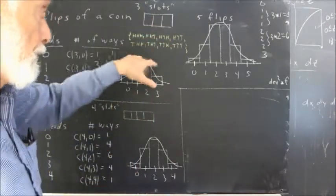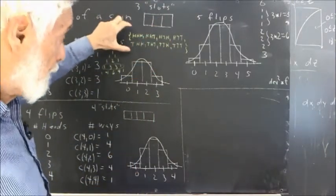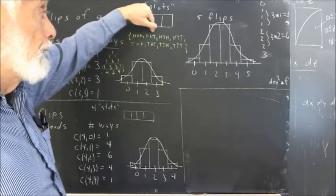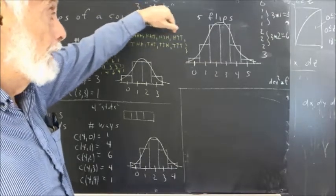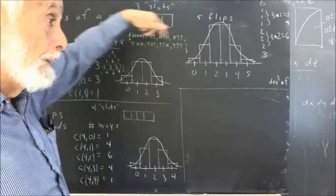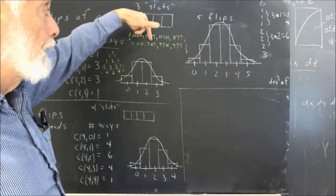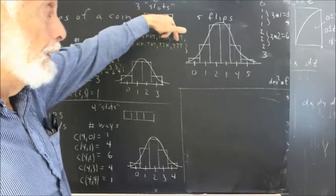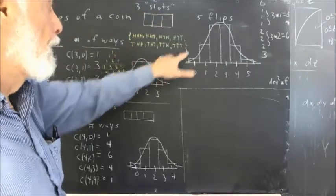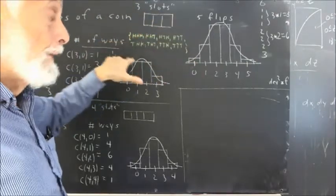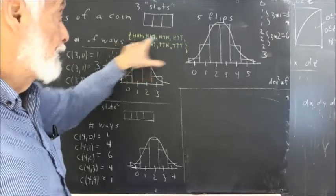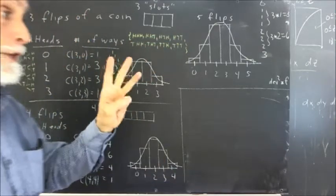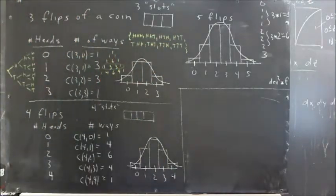Let me just get you back into the framework of it. The full sample space for three flips is: HHH, HHT, HTH, HTT, THH, THT, TTH, TTT. Right there is the sample space consisting of the eight possible outcomes when you flip three coins.